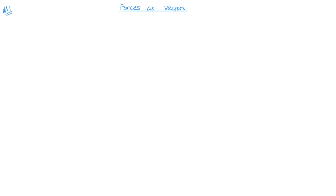Welcome to this M1 video on forces as vectors. We can write forces using vector notation with i and j, or as a column vector — for example, ai plus bj in Newtons, or as a column vector (a, b) in Newtons. When an object is in equilibrium, the forces total zero, so we'd have zero i plus zero j.